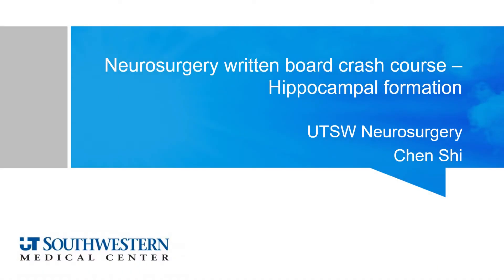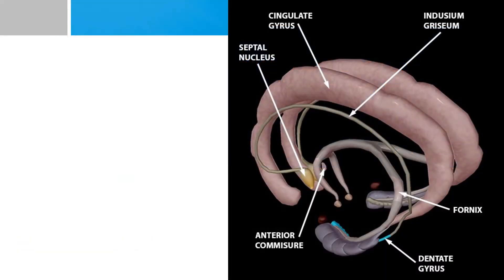Hello and welcome to Neurosurgery Board Crash Course. My name is Chen and we'll be talking about hippocampal formation today. We mentioned the hippocampus a lot in previous videos. The hippocampus is divided into a head, a body, and a tail. We covered in the septal area video that there is a structure called the indusium griseum, which is the terminal extension of the hippocampus that loops around on top of the corpus callosum into the septal area.